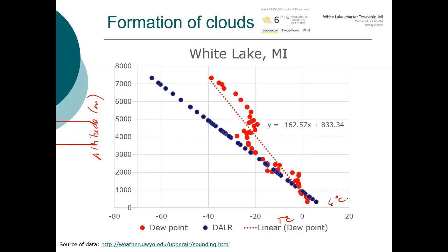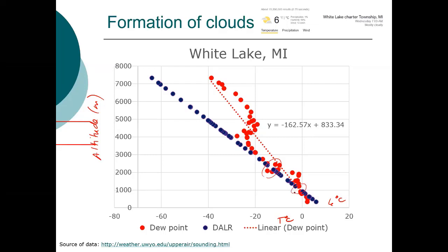The data is never as clean as what you see in textbook cartoons. But what you see is that the cross — where the dew point line and the dry adiabatic lapse rate cross — is at about a thousand meters. So we have low-lying clouds.